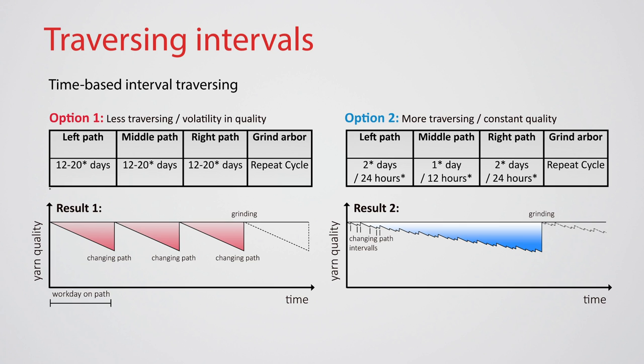The second option shows faster intervals. The roving changes the path every few days and is cycling between the channels. This results in more traversing, but the yarn quality is more consistent overall and will only diminish over time, since every channel is used equally. The right interval depends on preferences and the material which is used.